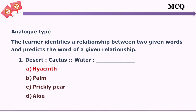Multiple choice questions can also be created as an analogous type. In this type the learner deduces or identifies a relationship between two given words, and based on that predicts the word of the given relationship. For example, the learner identifies the relationship between desert and cactus — the habitat and the plant that exists in that habitat — then predicts the relationship between water and what. The correct answer is hyacinth. The other alternatives are also plants but existing in habitats other than water.